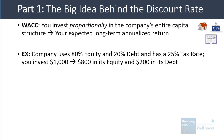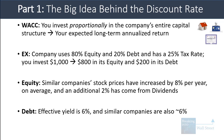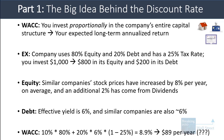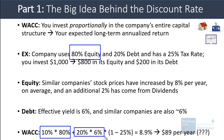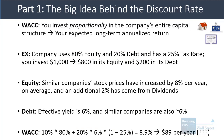For example, say the company uses 80% equity and 20% debt, and has a 25% tax rate. If you invest $1,000, you put $800 in its equity and $200 in its debt. Similar company stock prices have increased by 8% per year on average, with an additional 2% from dividends, giving a cost of equity of 10%. The effective yield on debt is 6%. So WACC is 10% times 80%, plus 20% times 6% times one minus the tax rate, coming out to around 8.9%. In theory, you'll earn about $89 per year on a $1,000 investment — though a lot of it reflects capital gains from the stock price going up.